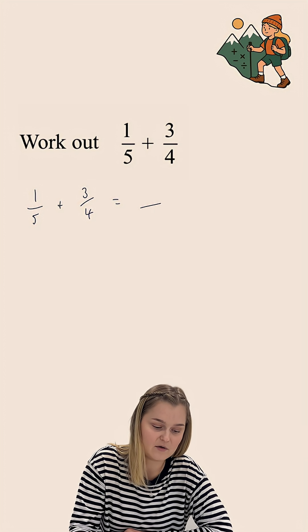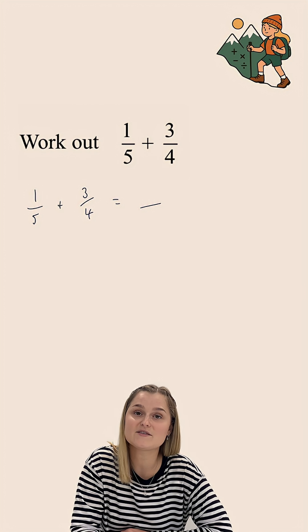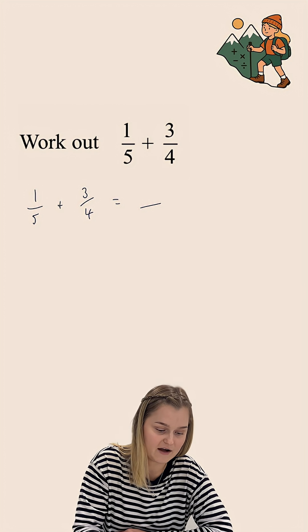So, what I am looking for here is a number that is in both the 5 and the 4 times table. This is known as the lowest common multiple of 5 and 4.